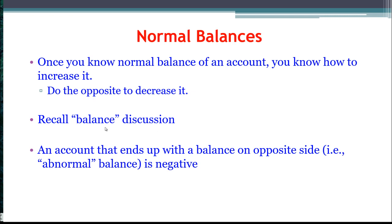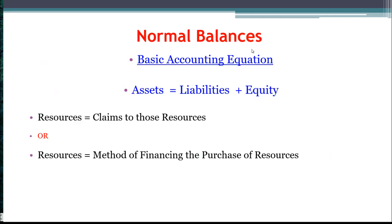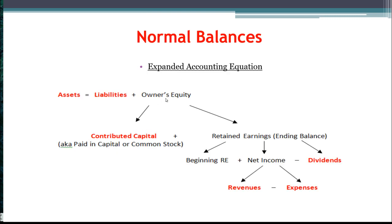So we just covered the balance discussion itself. To identify the normal balance of an account, we need to go back and talk about the basic accounting equation: Assets equals liabilities plus equity. If we break this out further with owner's equity into contributed capital and retained earnings, and then break retained earnings out into beginning retained earnings plus net income minus dividends, and then break net income out further into revenues minus expenses.